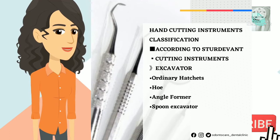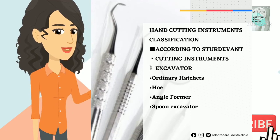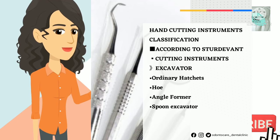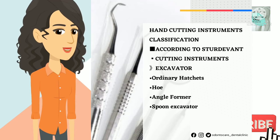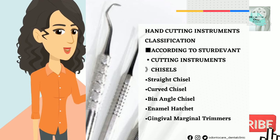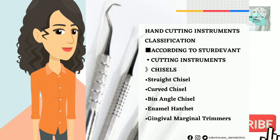Cutting instruments involve excavators, chisels, and others. Excavators include ordinary hatchets, hoe, angle-former, and spoon excavator. Chisels include straight chisel, curved chisel, bin-angle chisel, enamel hatchet, and gingival marginal trimmer.